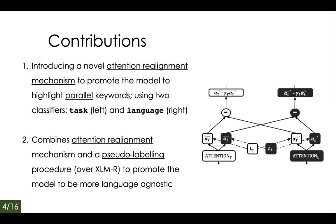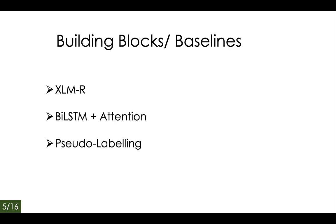Our main contribution is a mechanism by which we perform attention realignment using two classifiers that are jointly trained — a task classifier on the left and a language classifier on the right — combined with a pseudo-labeling procedure. The main goal is to ensure that the model is language agnostic at the word level, meaning the model should be able to highlight the same or parallel words in different languages. In the upcoming slides, we will first describe the building blocks and baselines: XLMR, BiLSTM plus attention, and pseudo-labeling, before returning to the attention realignment mechanism.